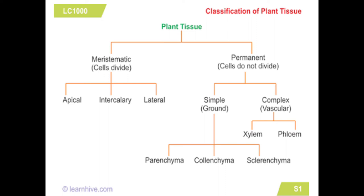At the maturation stage, we look at permanent tissue. Permanent tissue is divided into simple and complex types. Simple permanent tissue is called ground tissue, while complex permanent tissue includes xylem and phloem. Simple tissue can be seen in a cross section.